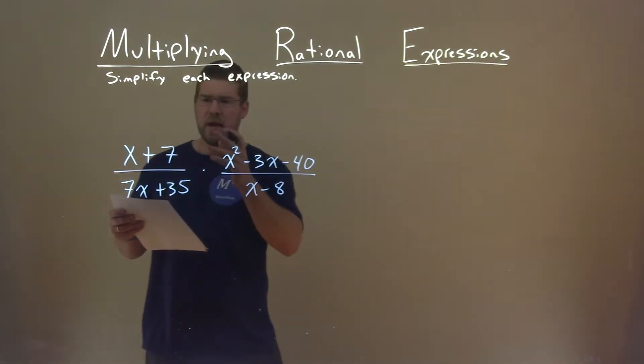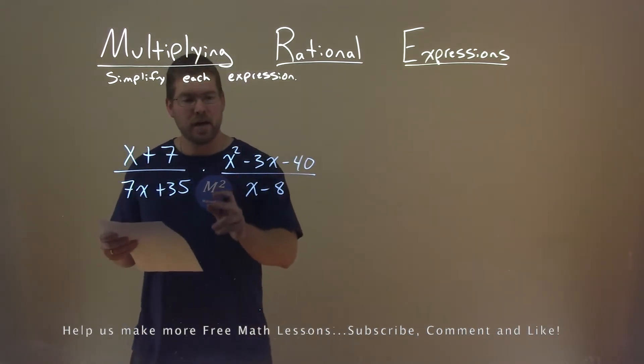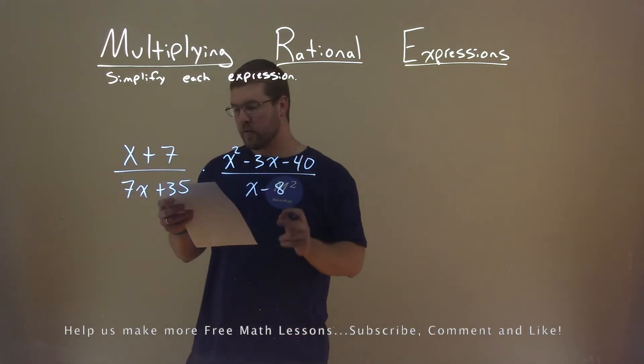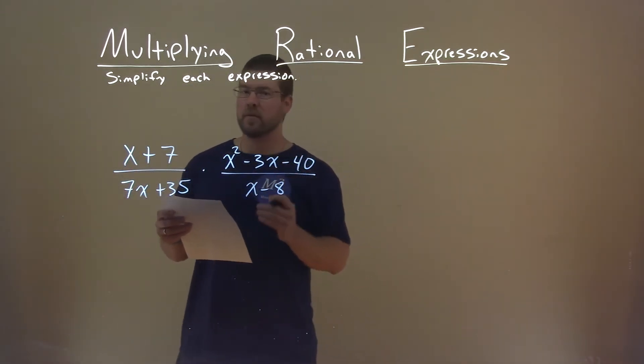We're given this problem right here: x plus 7 divided by 7x plus 35 times x squared minus 3x minus 40 divided by x minus 8. And we want to simplify this expression.